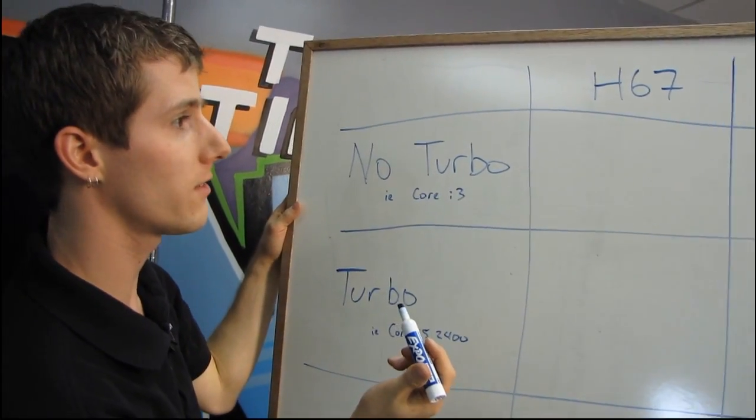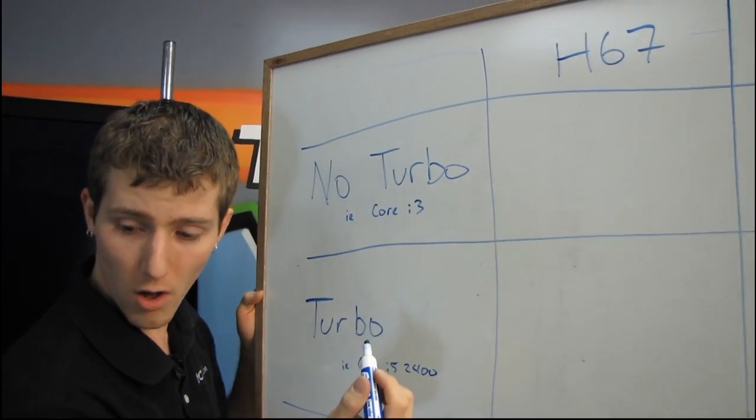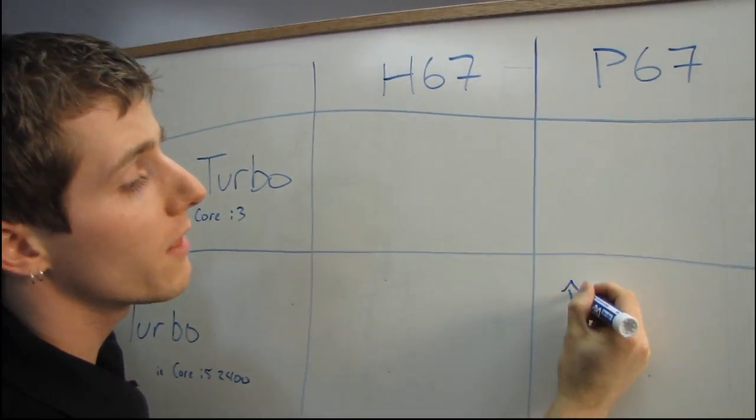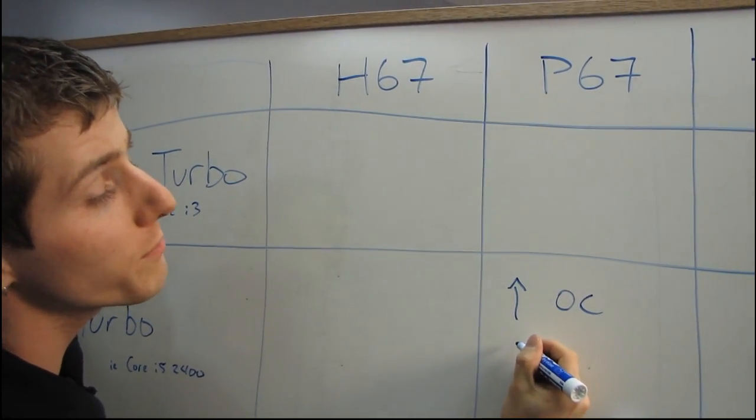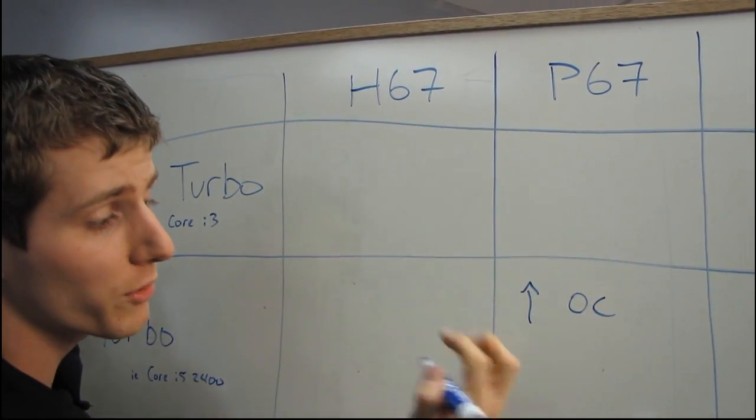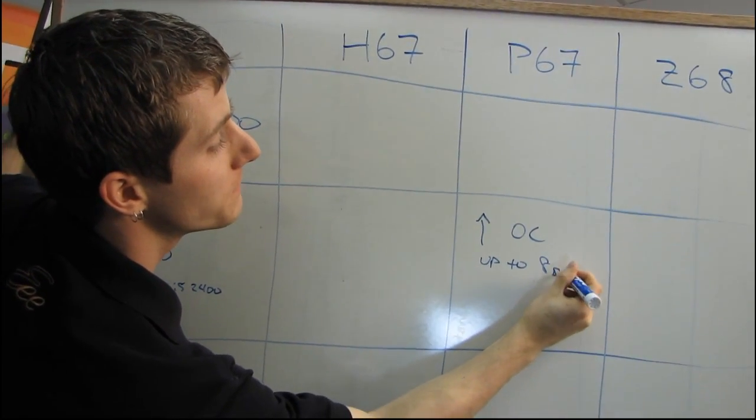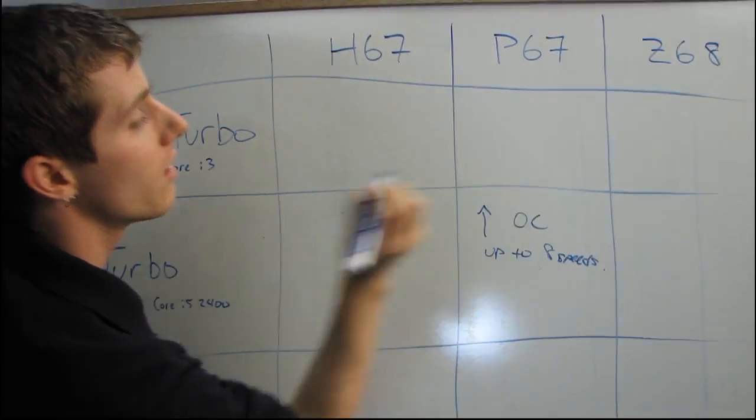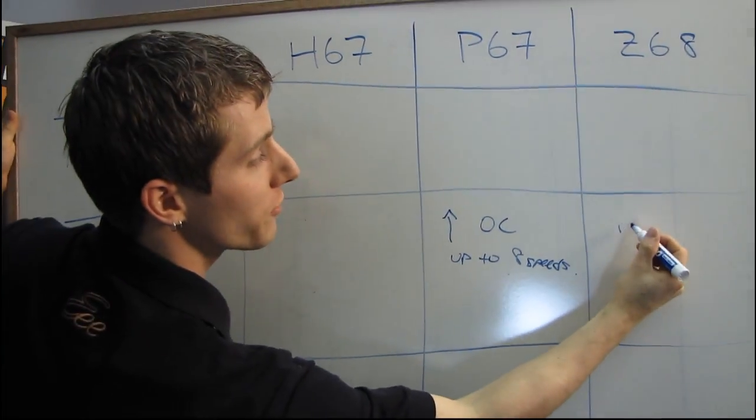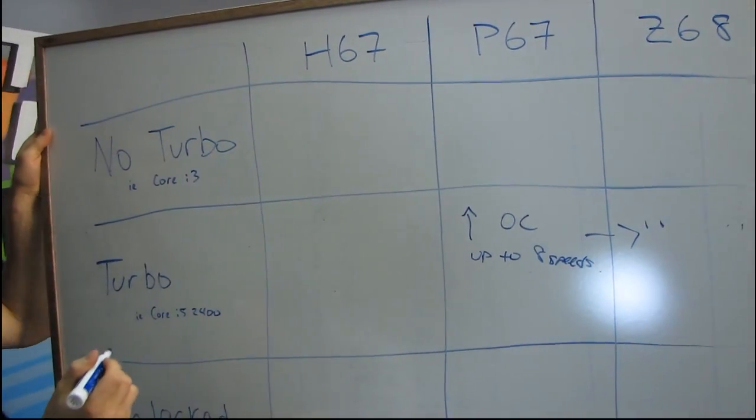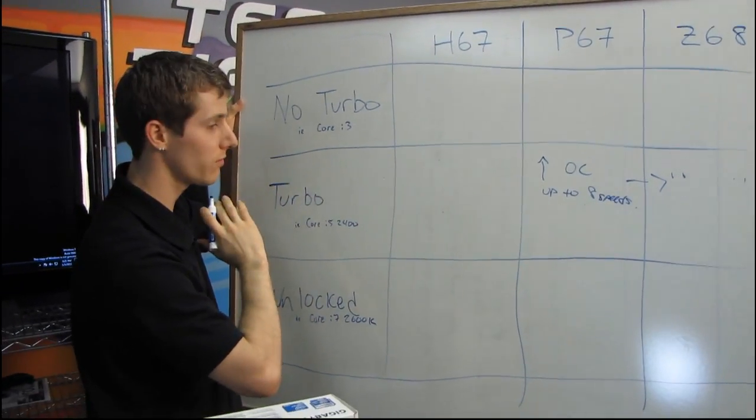They are also allowed to turn up the multiplier and overclock up to 4 speed bins above that on the P67 chipset, so up to 8 speed bins or multiplier levels total. On the H67 chipset, it can only use turbo mode.